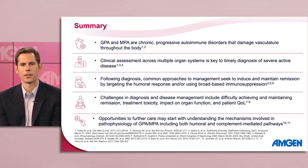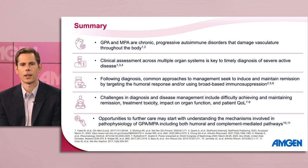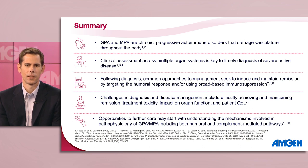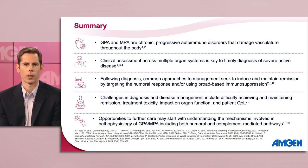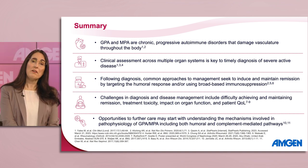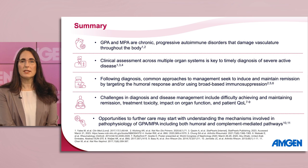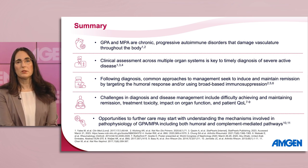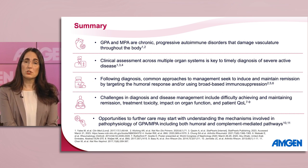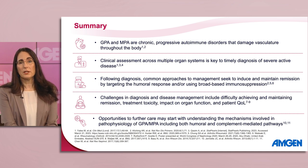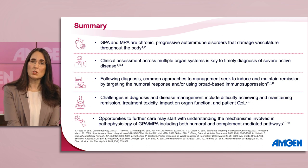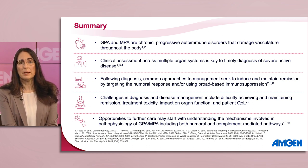As a summary, we invite you to consider the following. That GPA and MPA are chronic and progressive autoimmune diseases that cause small to medium vessel vasculitis, damaging vasculature throughout the body. That a careful systematic approach to clinical assessment across multiple organ systems is key to timely diagnosis. That common approaches to management seek to induce and maintain remission by targeting the humoral response and/or using broad-based immunosuppression. However, challenges in diagnosis and management of disease include difficulty achieving and maintaining remission, treatment toxicity, impact on organ function, and effect on patient quality of life. And finally, the opportunities to further care may start with understanding the mechanisms involved in pathophysiology of GPA and MPA, including both humoral and complement mediated pathways.